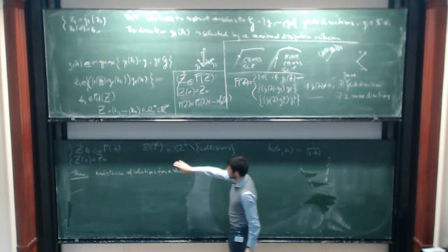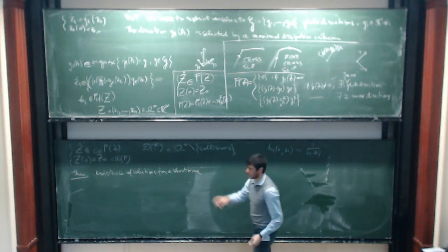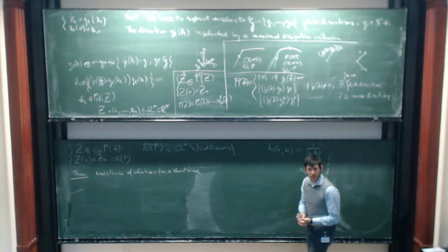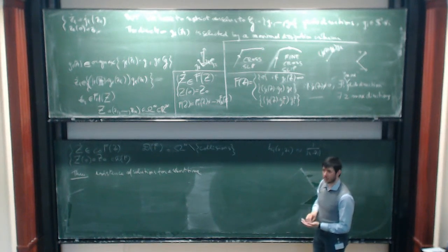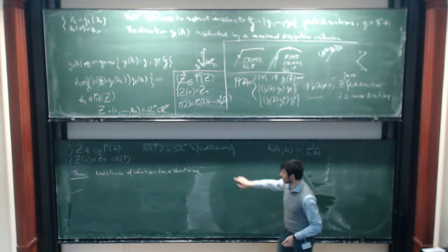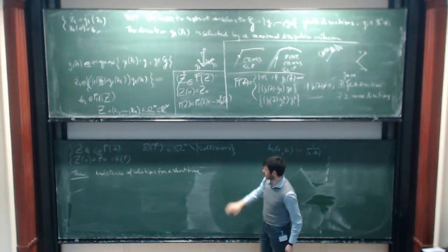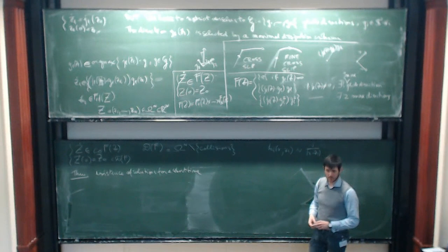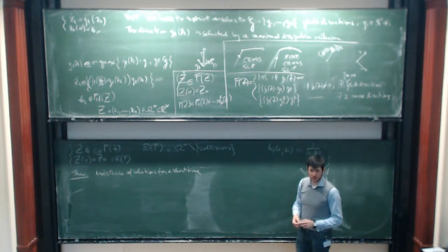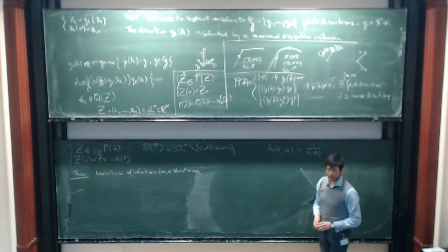If the initial condition Z_0 is in the domain of the right-hand side (no collisions), at least one solution exists for the differential inclusion. The existence is guaranteed because the convexification construction satisfies Filippov's hypotheses, and the maximum existence time is computed by the Peano-type cylinder formula. What makes existence stop is either two dislocations colliding or a dislocation hitting the boundary.